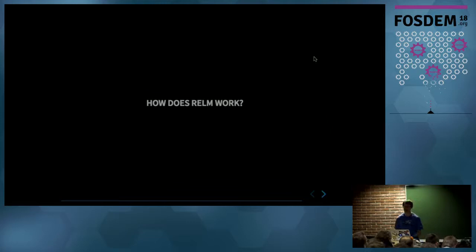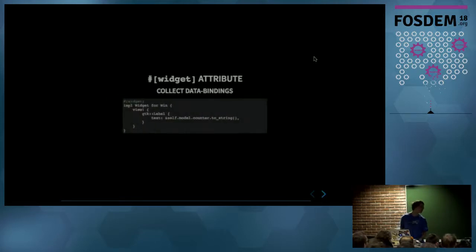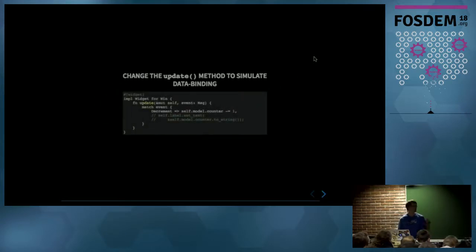So how does all of that work? So the widget attribute will start by connecting the data bindings. So it will analyze the view, check that in this case the label has a property that is called text that is bound to the counter attribute of the model. And then it will actually change the code you wrote in the update method to actually update the view. So it will see here that the counter attribute was changed. And it will use this value to update the view because it noticed that there was a binding in the view.